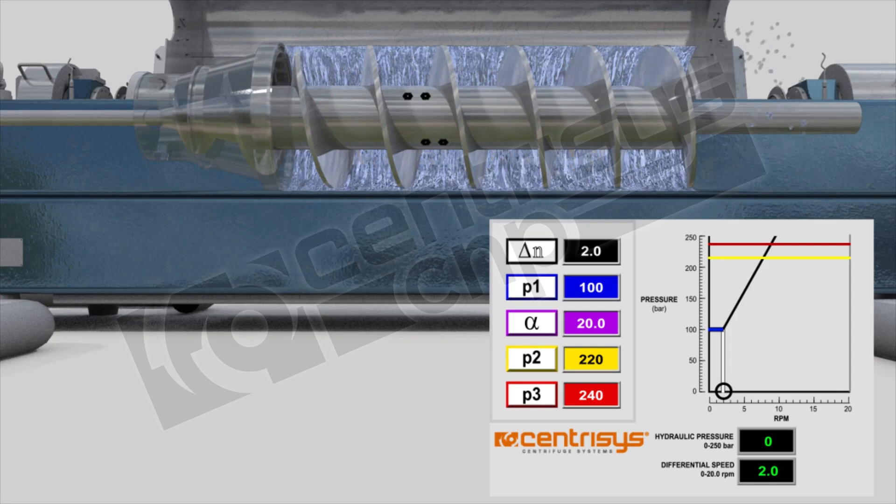As I start this video you will see solid particles getting into the machine and settling in the space between the bowl and scroll. As the solids are being moved out, the centrifuge will speed up once it reaches this P1 and you will see the actual pressure here on the bottom right increase, and you will see the actual differential speed increase once it hits the P1 set point or exceeds the pressure past 100 bar.